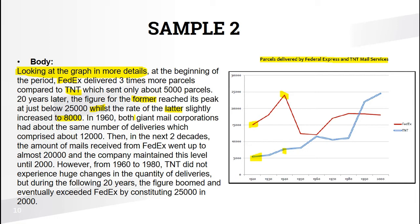In 1960, both giant mail corporations had about the same number of deliveries, comprising about 12,000. In the next two decades, the amount of mail received from FedEx went up to almost 20,000 and the company maintained that level until 2000.